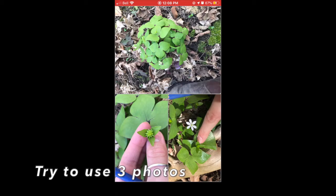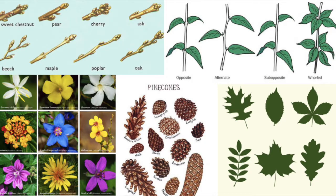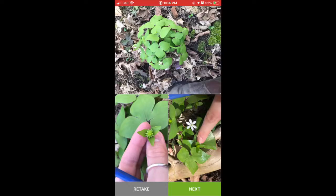For trees, show the leaf arrangement and shape — are the leaves in an opposite or alternate arrangement? Are the leaves toothed or lobed? Make sure to take a picture if it has cones, buds, flowers, or catkins, and show what the bark looks like. For plants, show the flower or fruit if there is one, including all flower parts, as well as the leaf shape and arrangement. Animals can be trickier because they move, but try your best to show distinct markings, colors, and size of the animal.